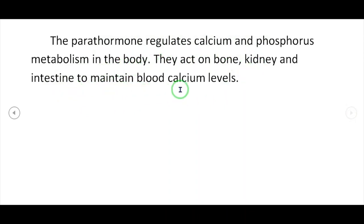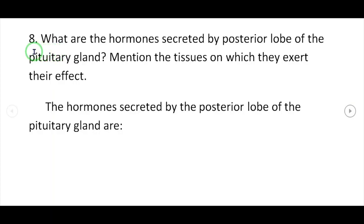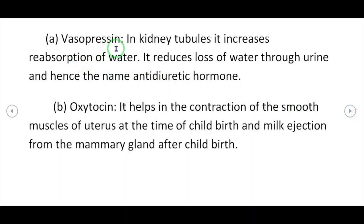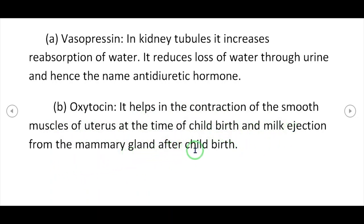Question 8: Hormones secreted by the posterior lobe of the pituitary gland. First, vasopressin — in kidney tubules it increases reabsorption of water and reduces loss of water through urine, hence named antidiuretic hormone. Second, oxytocin — it helps in the contraction of smooth muscles of the uterus at the time of childbirth and milk ejection from the mammary gland after childbirth.